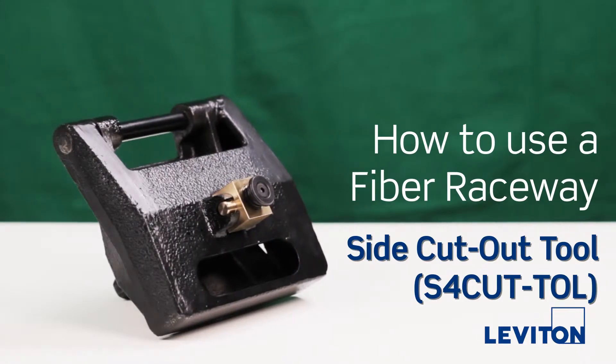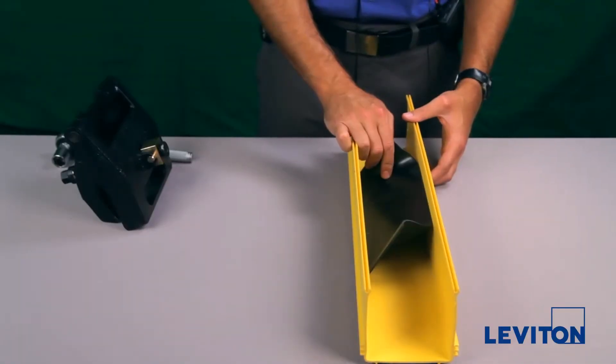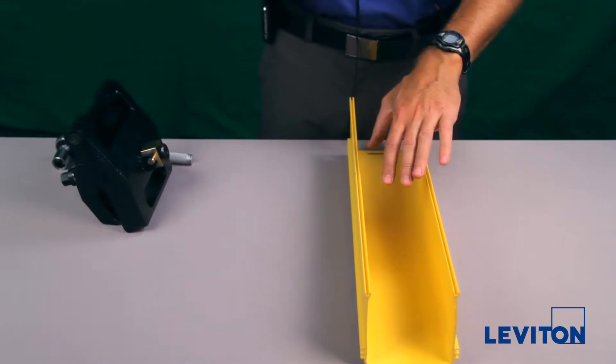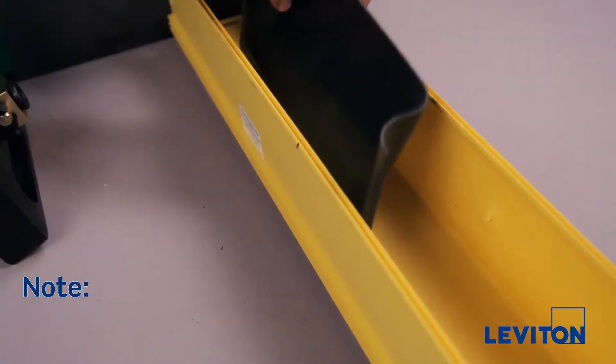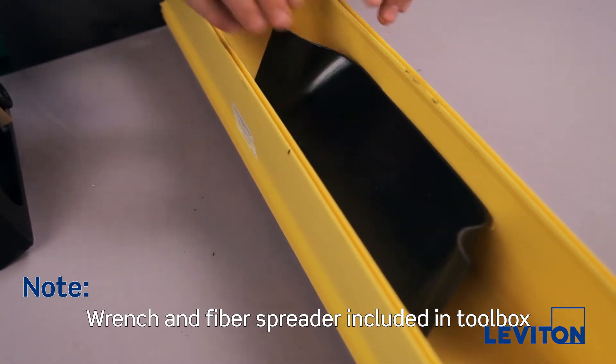Today we're going to show you how to use the side cut out tool. If you already have your fibers running through your ducting, you can use this to protect the fiber. Go ahead and stick it in over your fiber.